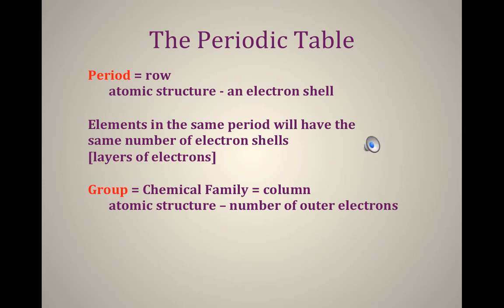Now groups on the periodic table are the same as chemical families and they are columns. They run up and down. So group one are the alkali metals and it turns out they all have one outer electron. Why they're called a family is because they want to behave the same way, they're going to have similar properties. So all the alkaline metals want to lose one electron to become stable.